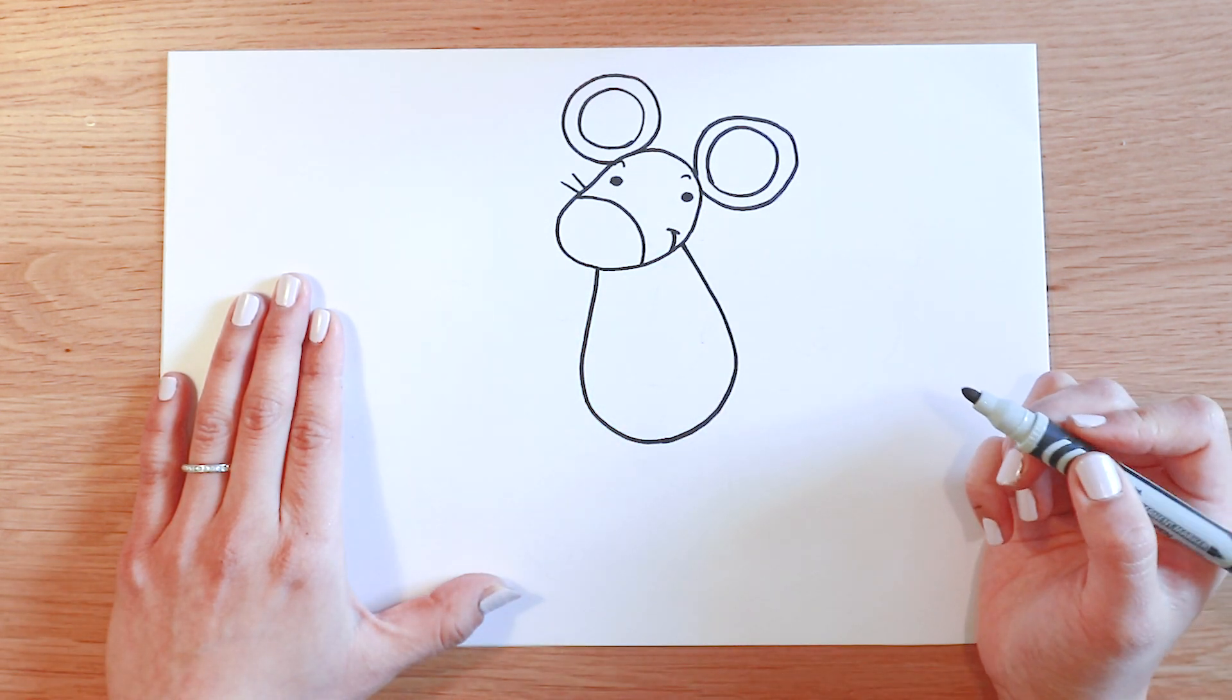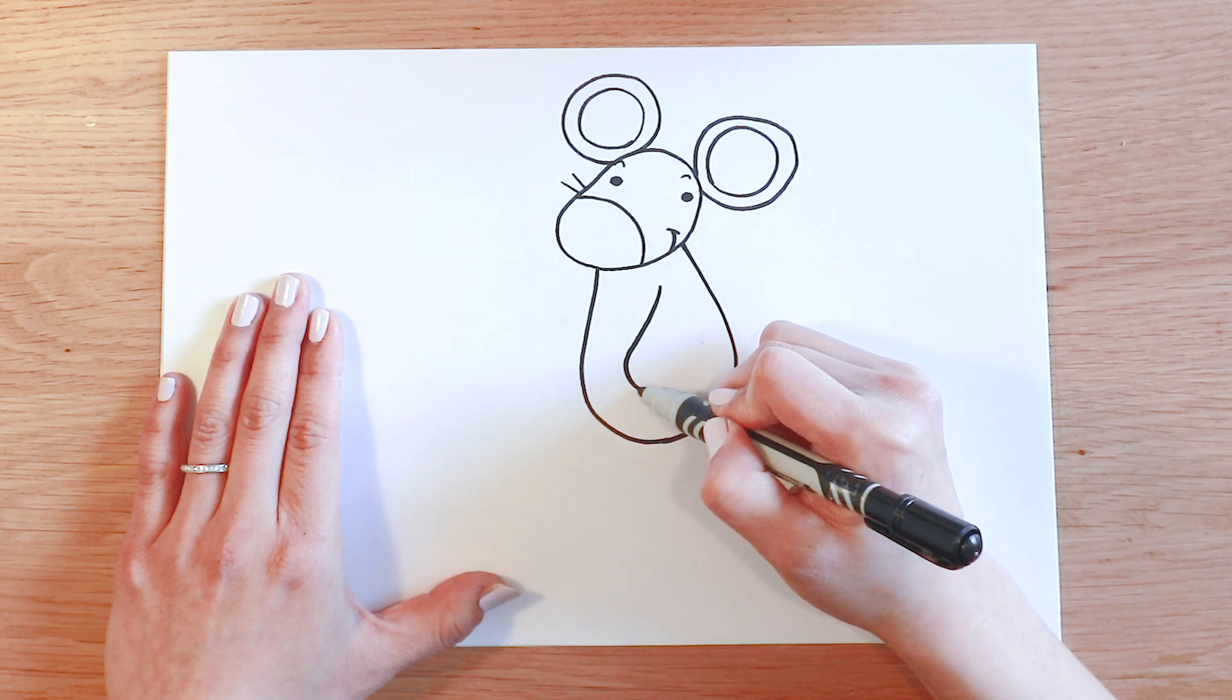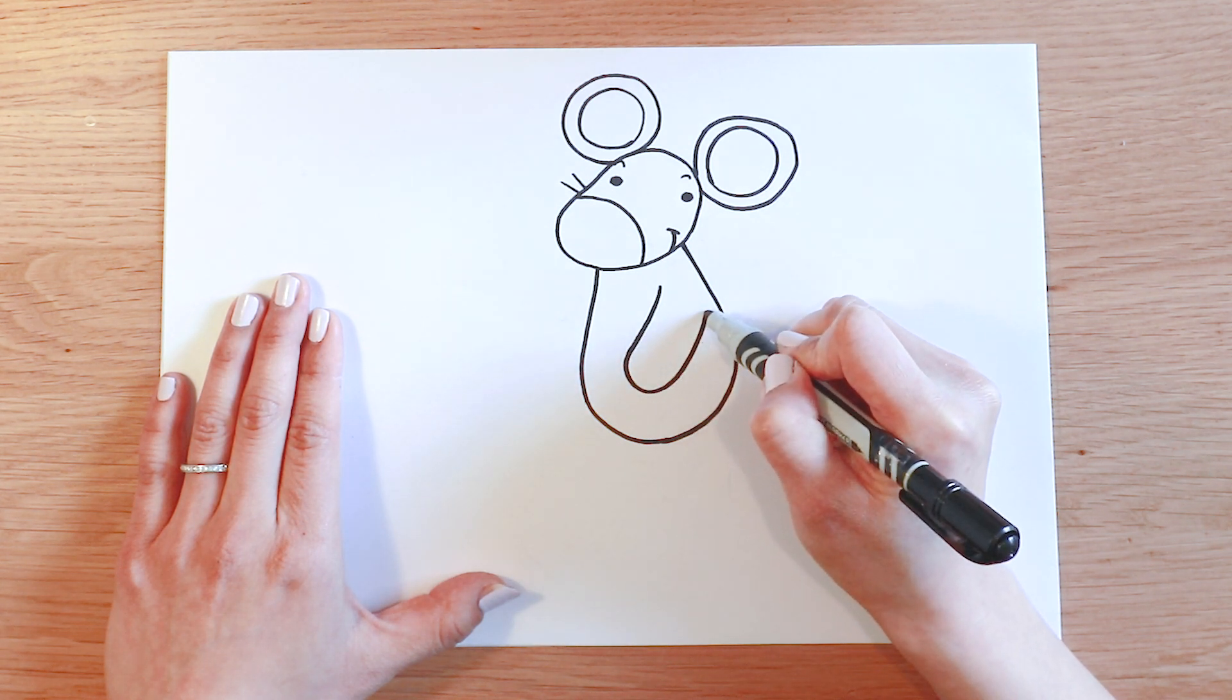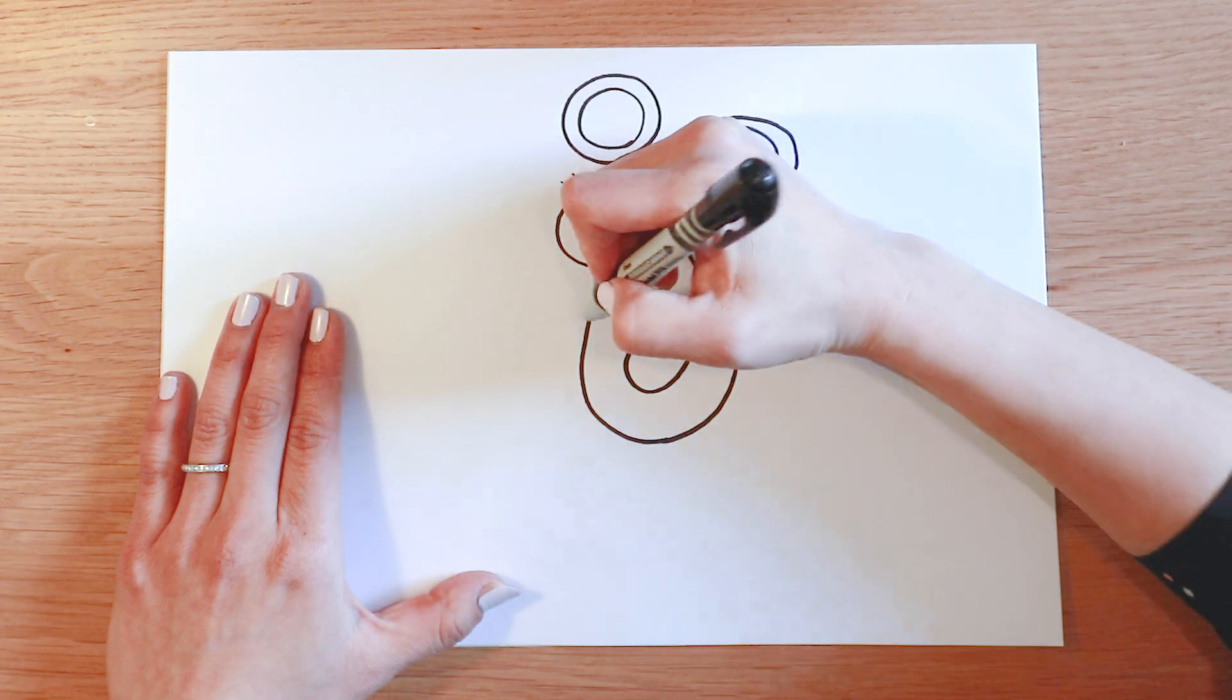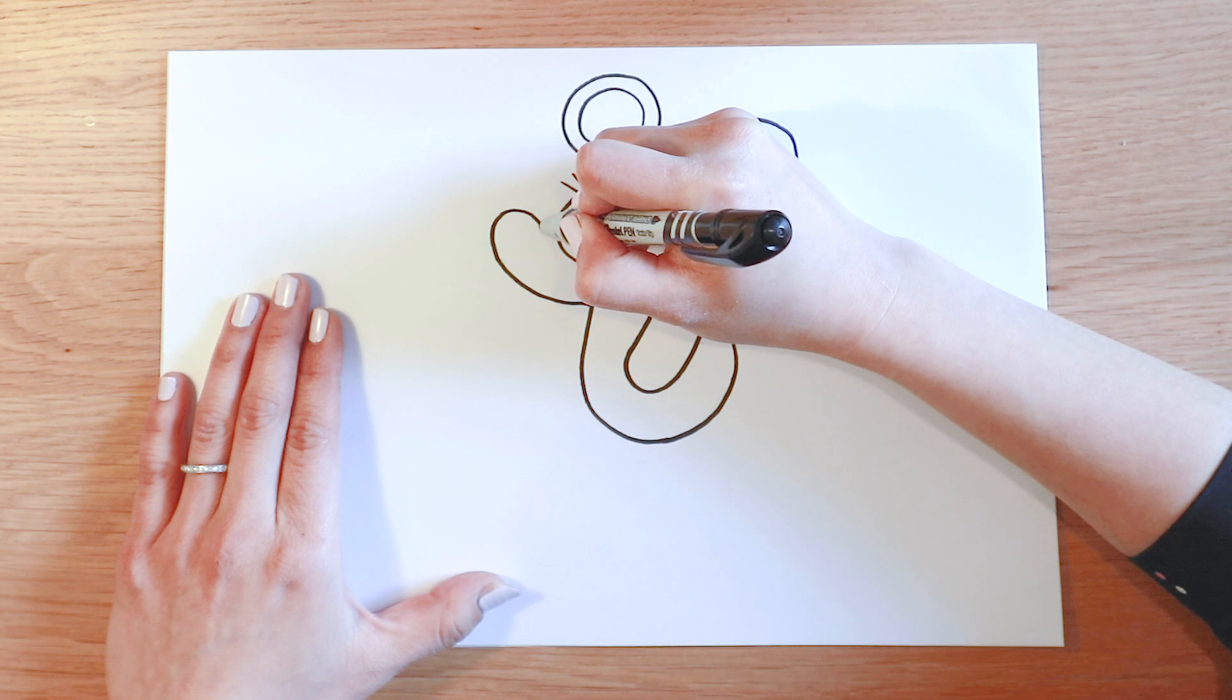And I'm gonna draw his arms. Start from here. It's a long U-shape in a slight angle. For the other arm, start from his chest here. Turn around like that.